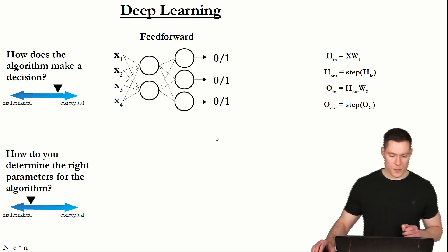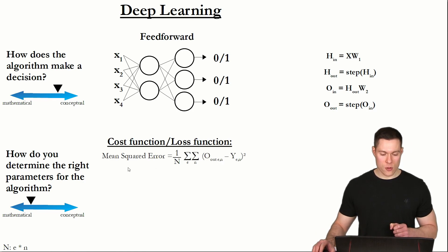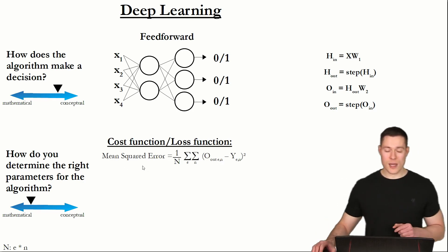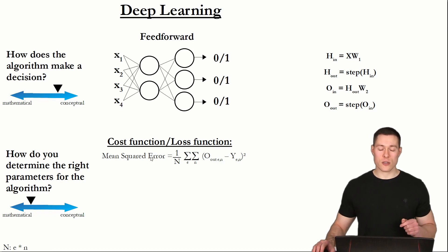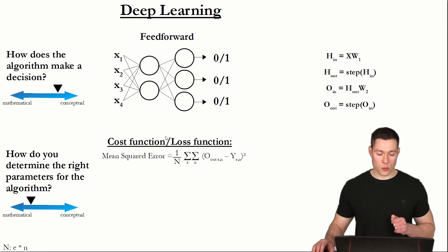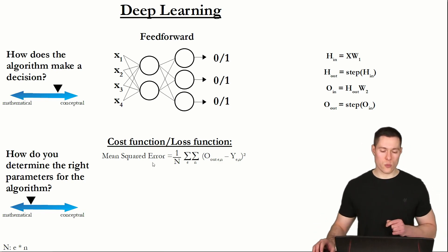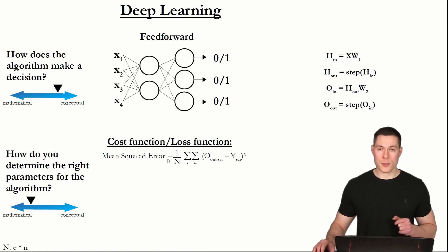We introduced the mean squared error as our cost function, because with that we could measure in a precise and concrete way how good the neural net actually is at making decisions or predictions.